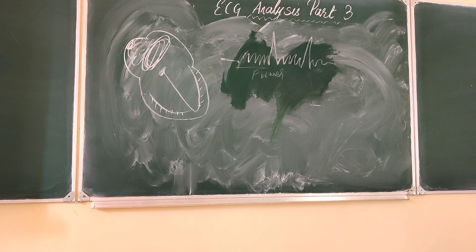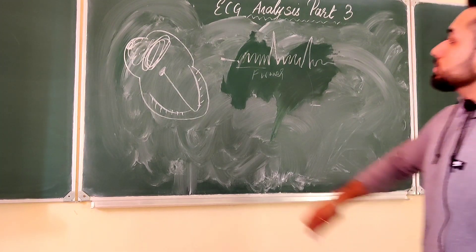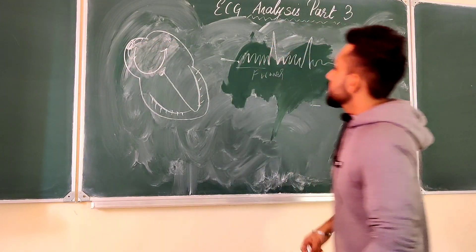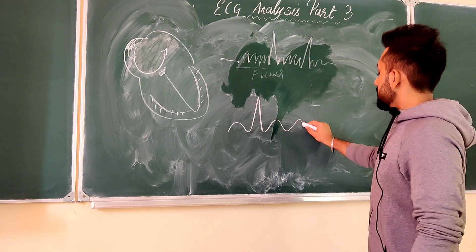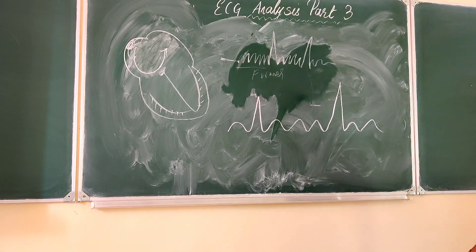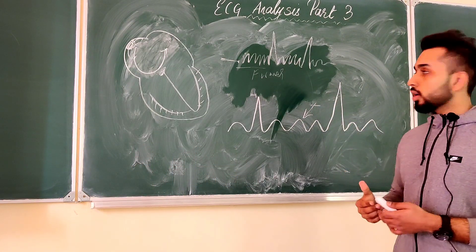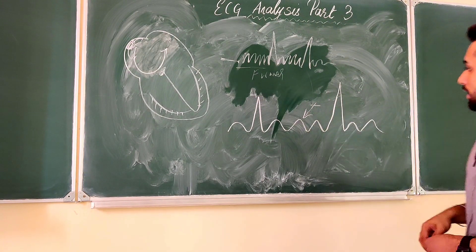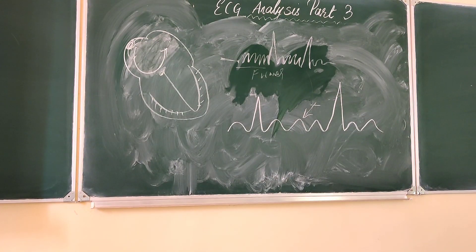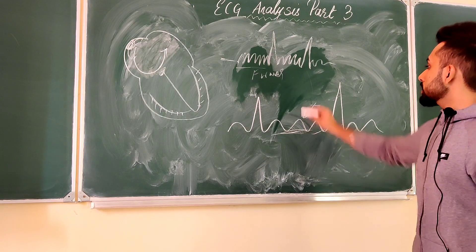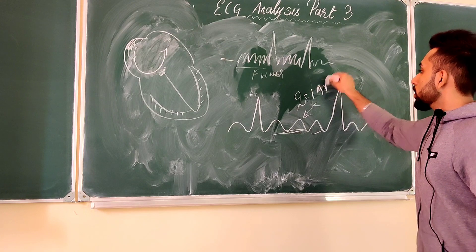The fourth case is atrial flutter, where impulses roam in a circular pathway in the atrium. On the ECG you get a saw-tooth pattern, which is very easily evident when you turn the ECG upside down. You can see a QRS complex, and impulses are traveling in a circular fashion with no interval between the flutter waves. This can also represent atrial flutter with 2:1 AV block.